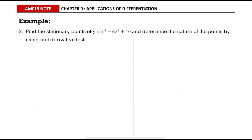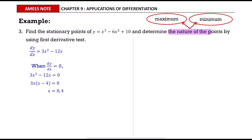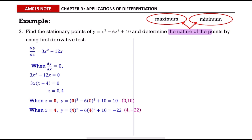In this example we want to find the stationary points and determine the nature of the points — that is, whether each is a maximum or minimum point. Find dy/dx first, then equate it with zero. This expression can be factorized. Solve for the values of x, then find the values of y by substituting x = 0 and x = 4 into the equation, and state the stationary points.